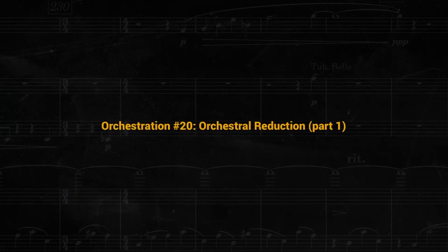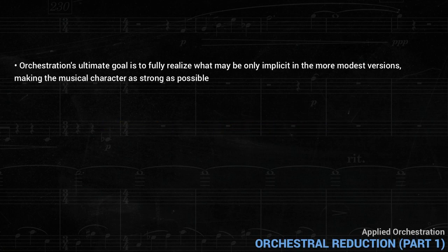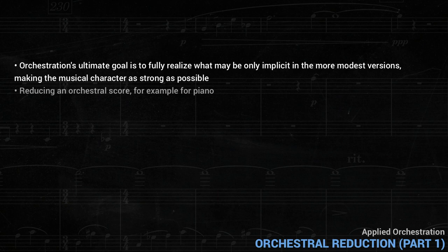In previous lessons, we've looked at orchestrating piano music, as well as orchestrating from sketches. In both these situations, the orchestration's ultimate goal is to fully realize what may be only implicit in the more modest versions, making the musical character as strong as possible. In this lesson, we'll look at the opposite process: reducing an orchestral score, for example for piano.